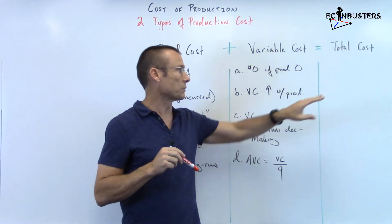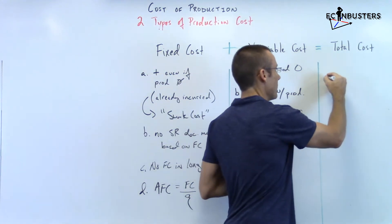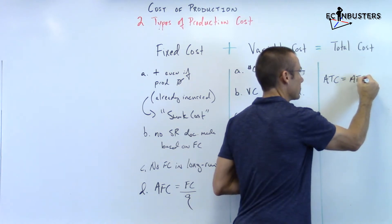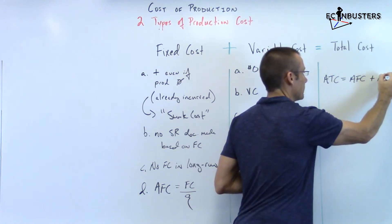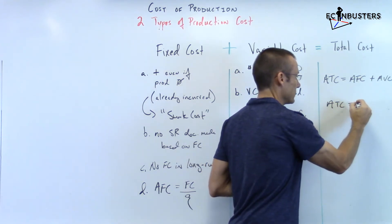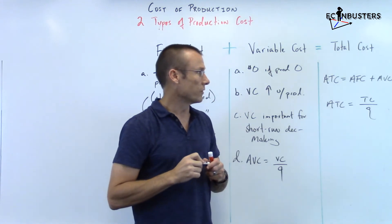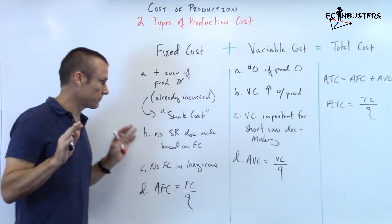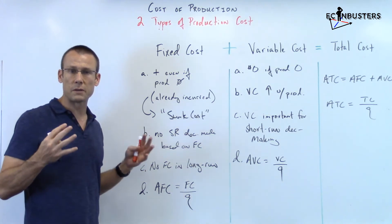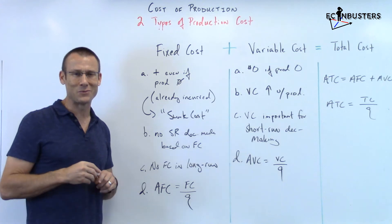Average total cost equals average fixed cost plus average variable cost. You can also find average total cost by taking total cost divided by quantity. Let me step out of the way so you can see all the notes on these big buckets of costs — they're going to be important in our next few videos. Thanks for tuning in; we'll see you in the next one.